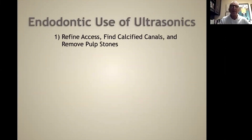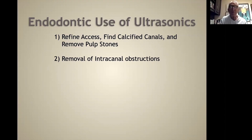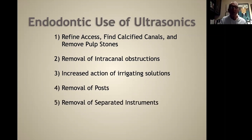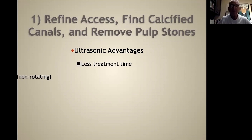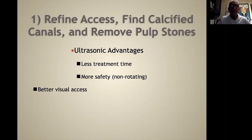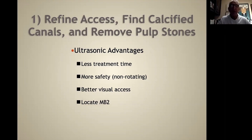The endodontic uses of ultrasonics include: one, refine access, find calcified canals, and remove pulp stones; two, removal of intracanal obstructions; three, increased action of irrigation solutions; four, removal of posts; five, removal of separated instruments; and six, surgical endodontics. When we talk about access, this has been a revolution. There are many advantages: less treatment time, more safety, better visual access, and it is much easier to locate MB2s.